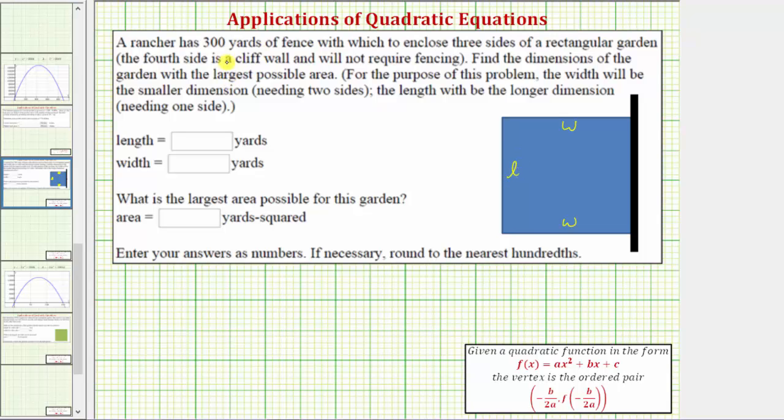And because the rancher has 300 yards of fencing, we know that l plus w plus w, or l plus 2w, must equal 300.